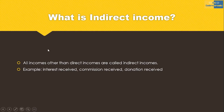What is Indirect Income? All incomes other than Direct Incomes are called Indirect Incomes. Examples include interest received, commission received, and donation received.